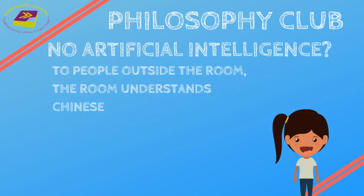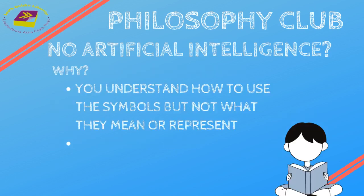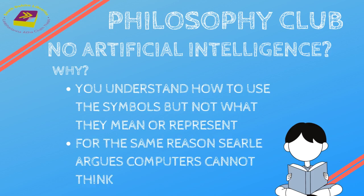John Searle, the philosopher who devised this thought experiment, argued that to the people outside the room submitting questions and getting answers, it looks like the room understands Chinese. But Searle also argues that although it appears to the outside world that the room understands Chinese, you inside the room do not. Assuming you don't actually speak Chinese, you don't understand the symbols you're processing or the answers you're sending out. You understand the rules of how to manipulate the symbols, but you don't know what they mean. To understand Chinese, you need to understand the meaning of the words, not just how to use them to convince others. To manipulate symbols is not really the same as being able to understand or know Chinese.